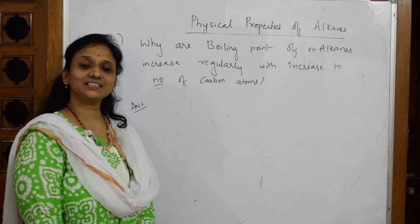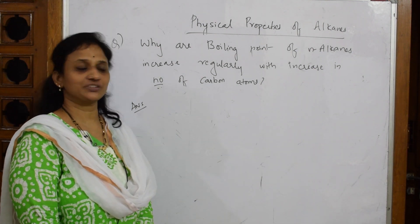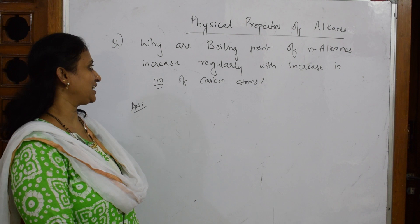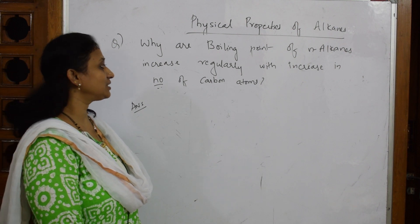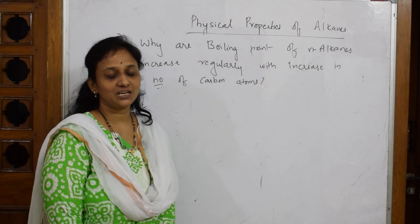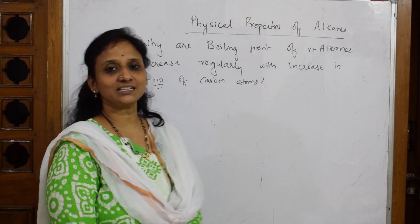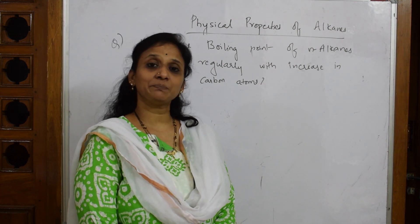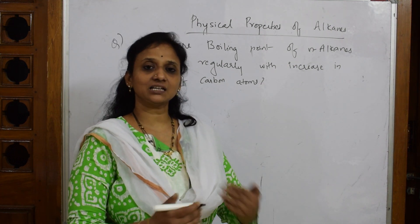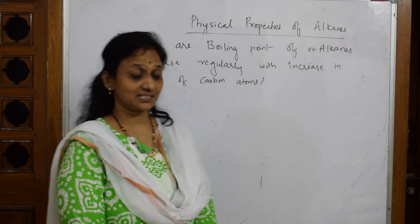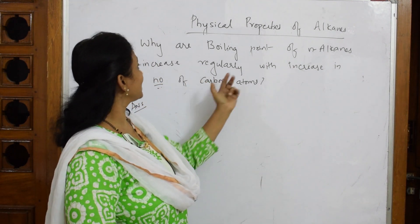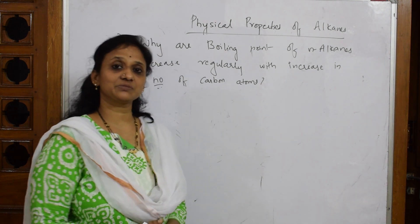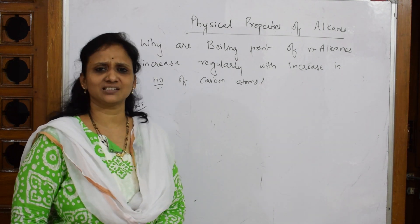Let's look at this reasoning question: the boiling point of n-alkanes increases regularly with an increase in the number of carbon atoms. As we go from methane to ethane, propane, butane, pentane — the carbon chain grows. Why does the boiling point increase as the number of carbon atoms increases?